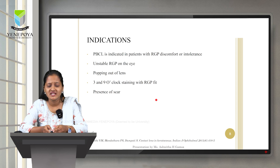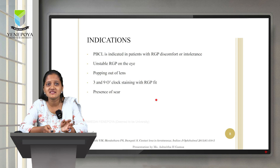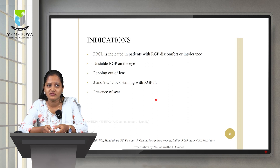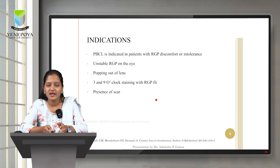Another indication is 3 and 9 o'clock staining with RGP fit. When there is an irregular surface, there are chances of dry areas at the 3 and 9 o'clock positions, leading to further complications, making piggyback contact lens more helpful. Additionally, if the patient has a corneal scar due to trauma or ocular infection, a piggyback contact lens can serve as a bandage and help in better healing.